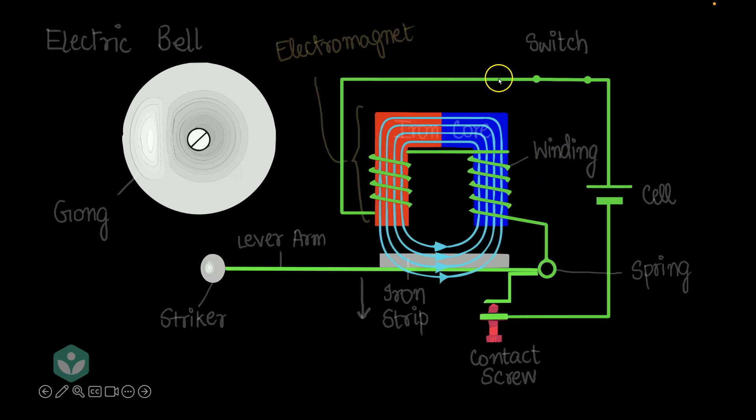So, the moment I turn the switch on, current starts flowing through the wires. And now the iron core and the winding together, they are behaving like an electromagnet. They are behaving like a magnet. What if you brought a piece of iron close to a magnet? Obviously, the magnet would attract this strip of iron.